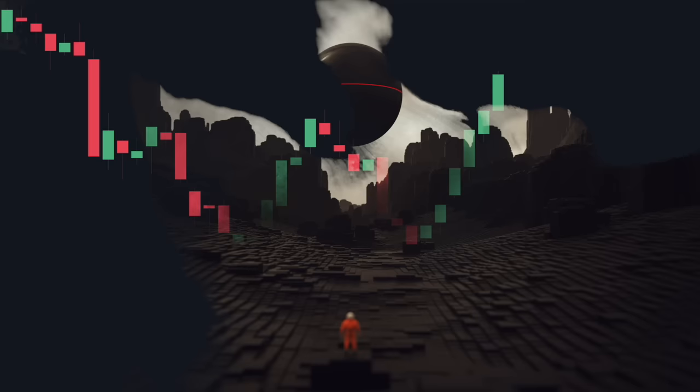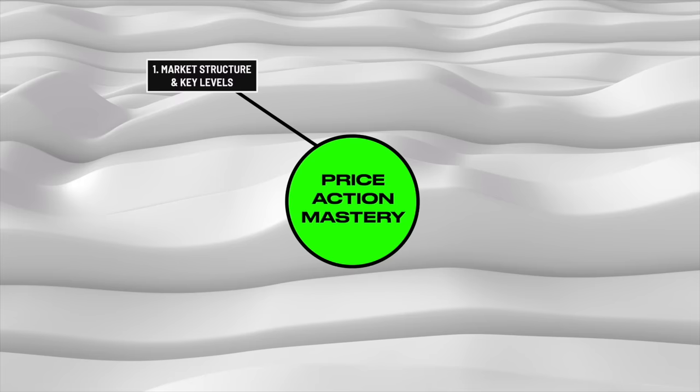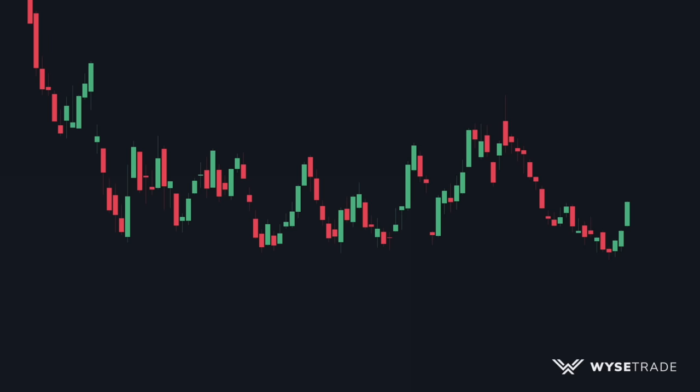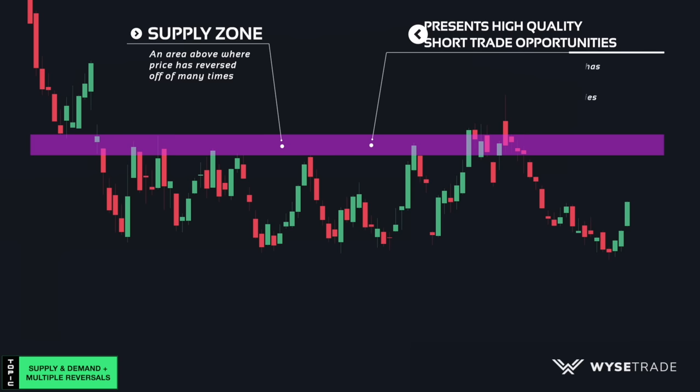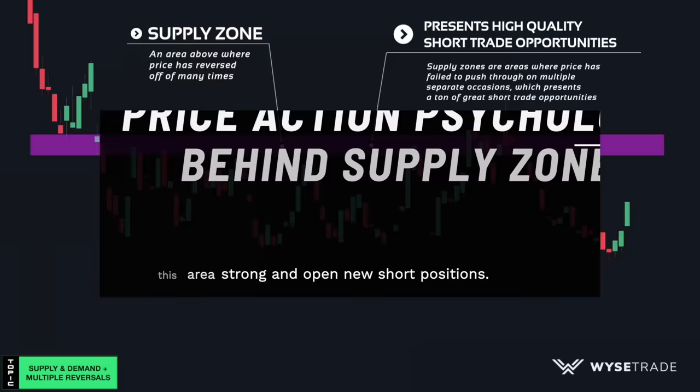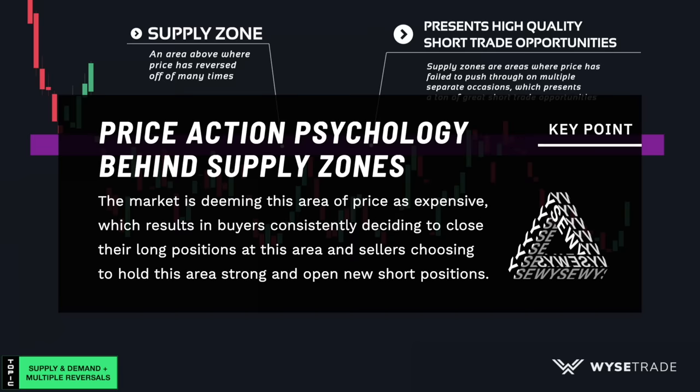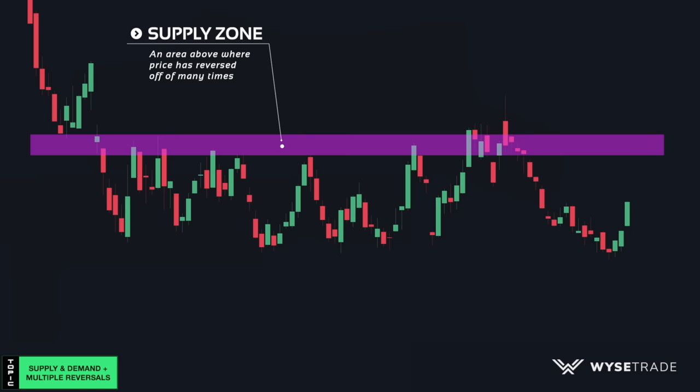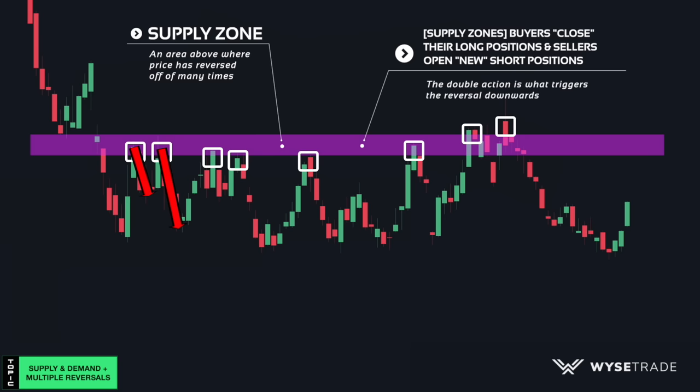Supply and demand and multiple reversals of price. When you have an area above where price reverses off of multiple times, this is known as a supply zone. Supply zones are areas where price has failed to push through on multiple separate occasions. From a price action standpoint, the market is deeming this area of price as expensive, which results in buyers consistently deciding to close their long positions at this area and sellers choosing to hold this area strong and open new short positions. The double action of buyers closing long positions and sellers opening new short positions is what creates downwards momentum for your short trade entries off of these key areas.